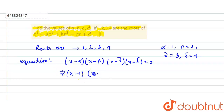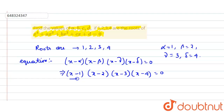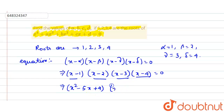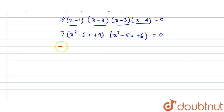So that gives us x minus 1, times x minus 2, times x minus 3, times x minus 4 equals to 0. Multiplying the first two factors gives x² minus 5x plus 4, and multiplying the last two factors gives x² minus 5x plus 6.